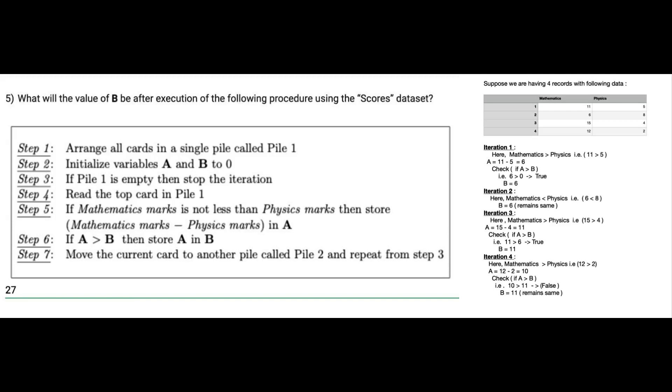And now the value of A is 10, but 10 is not greater than 11, so this is false and the value of B remains the same, which is 11. So finally, we will get the value of B to be 11.